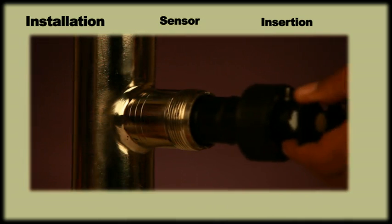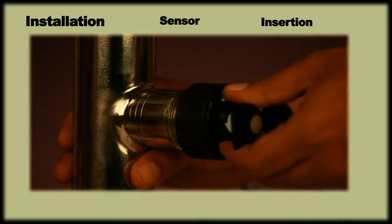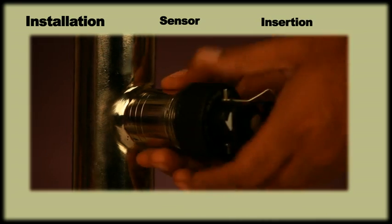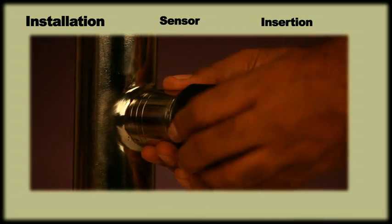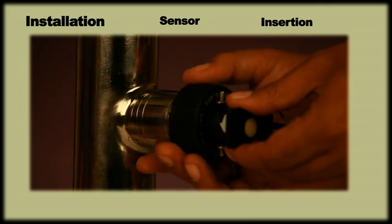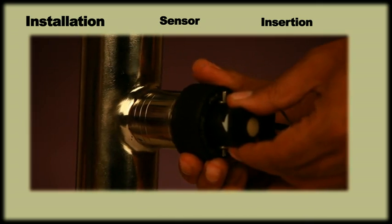Insert the sensor through the SS adapter in the correct orientation following the arrow mark. Slowly tighten the nut by gently rotating the sensor body. Ensure that the sensor gets properly locked in the notches of the adapter. Tighten the nut fully to finish the sensor installation.